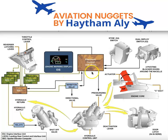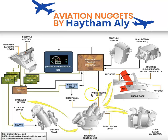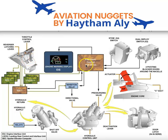Once the EIU energizes and allows the inhibition relay to be ready, the Electronic Control Unit can energize the directional valve inside the hydraulic control unit. The ECU can energize the pressurizing valve directly, but can only energize the directional valve indirectly when the inhibition relay is ready. At minus 4.2° throttle lever angle, the ECU energizes the solenoid of both the pressurizing valve and the directional valve.